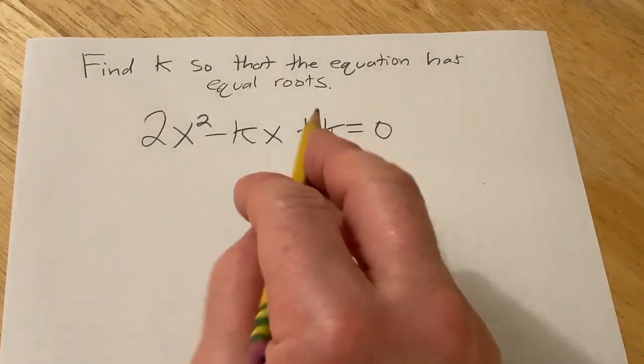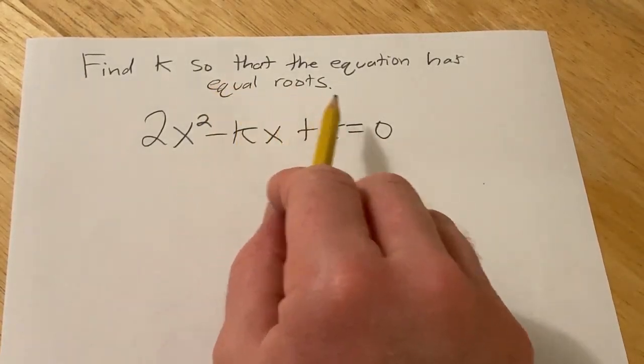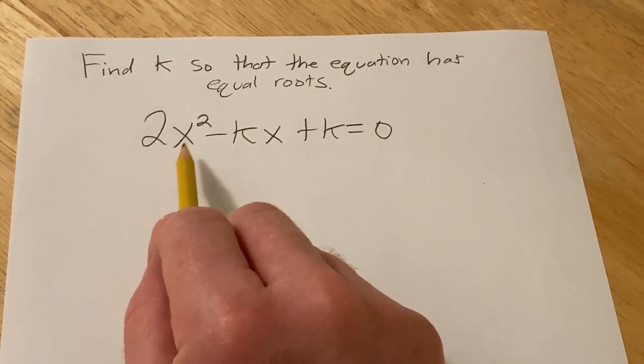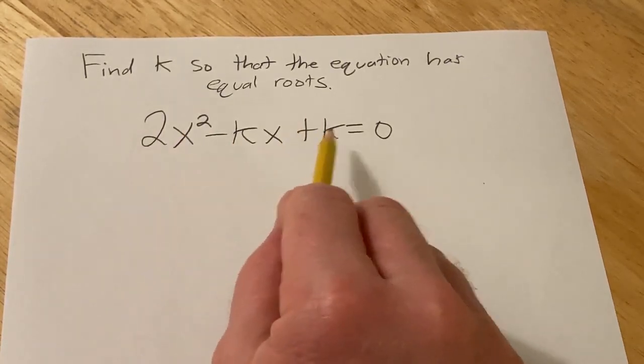Hi, here we have a fun problem. We're asked to find k so that this equation has equal roots. So the equation is 2x² - kx + k = 0.